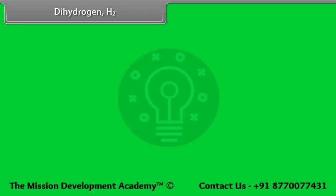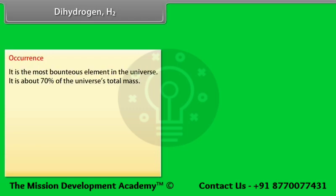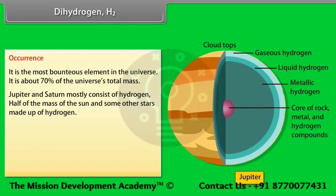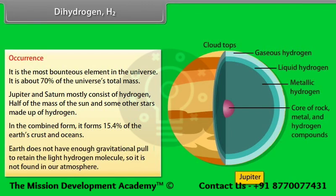Dihydrogen (H₂) — Occurrence: Dihydrogen is the most abundant element in the universe. It comprises about 70% of the universe's total mass. Jupiter and Saturn mostly consist of hydrogen. Half of the mass of the sun and some other stars is made up of hydrogen. In the combined form, it forms 15.4% of the Earth's crust and oceans. Earth does not have enough gravitational pull to retain the light hydrogen molecule, so it is not found in our atmosphere.